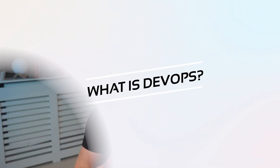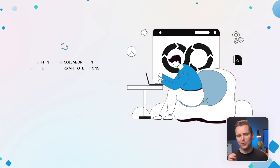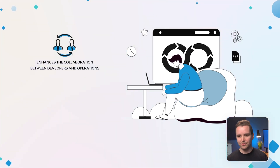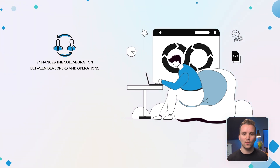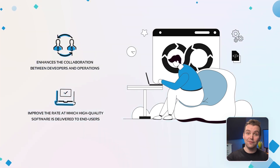What is DevOps? Before we start, let's try to understand what DevOps is first. The word DevOps is derived from two other words — Dev came from developers and Ops is from operations. The meaning of DevOps is somewhat tied to how the word is formed. It is a bridge that enhances the collaboration between the two major teams in software development. In DevOps, the goal is to improve the rate at which high-quality software is delivered to clients or end users.